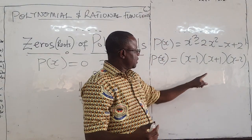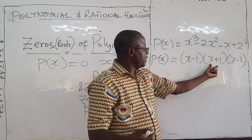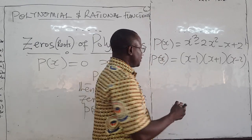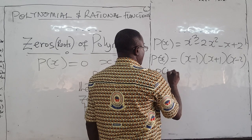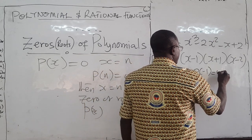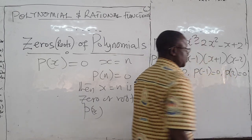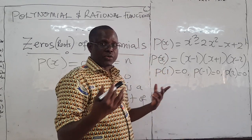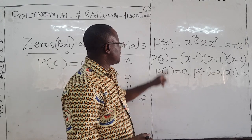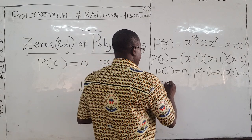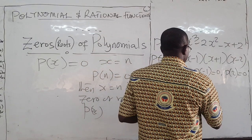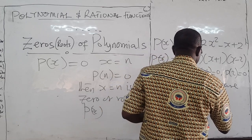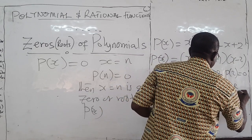When x is 1, all of that goes to zero. When x is negative 1, this also causes all of this to go to zero. When x is 2, this factor goes to zero, so the whole expression goes to zero. So P of 1 equals zero, P of negative 1 equals zero, P of 2 equals zero. So x equals 1, x equals negative 1, x equals 2 are the zeros or the roots of the polynomial P of x.